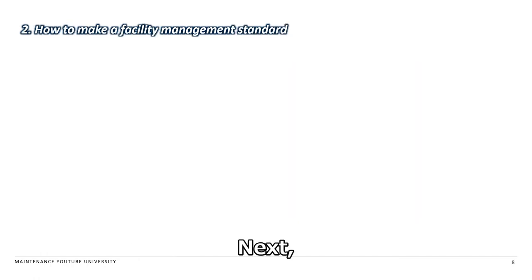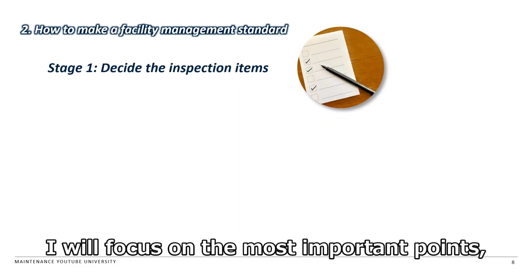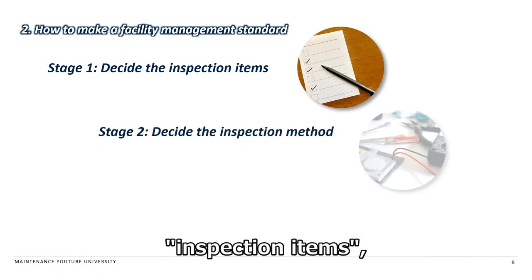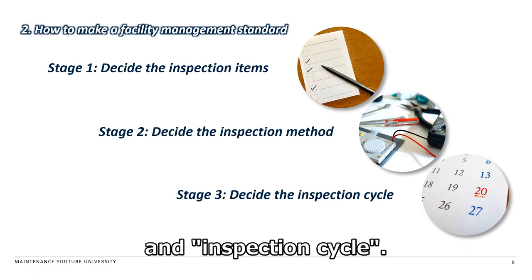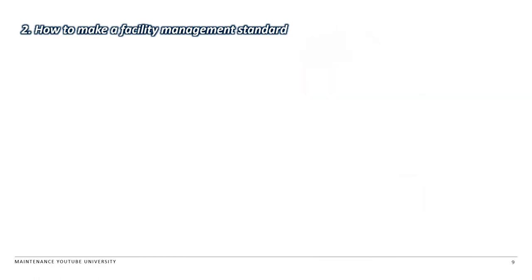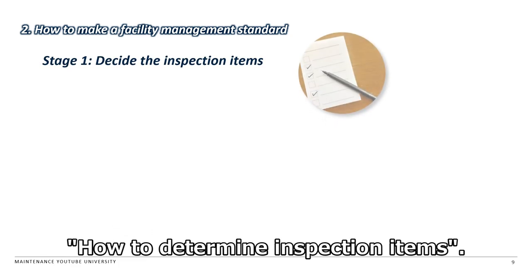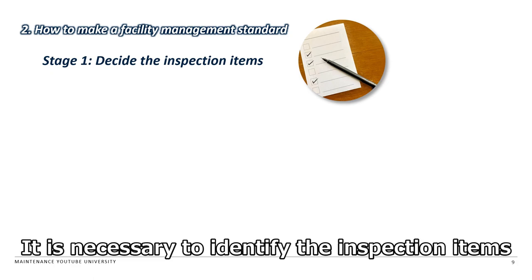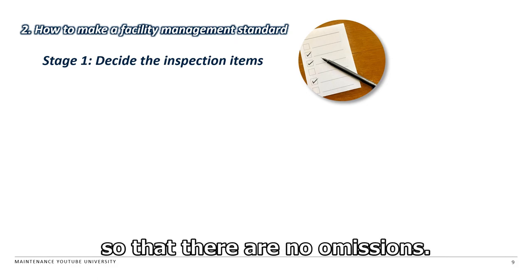Next, I will explain how to make a maintenance standard. This time, I will focus on the most important points: inspection items, inspection method, and inspection cycle. We will explain how to determine inspection items. It is necessary to identify the inspection items subjected to preventive maintenance for each equipment so that there are no omissions.